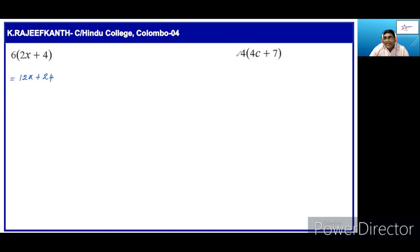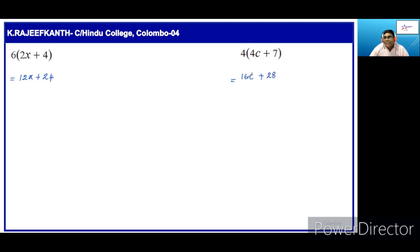Here, 4 times 4c plus 7. Then, 4 into 4c plus 4 times 7 is 28. So, we should multiply by this number each term of this expression.